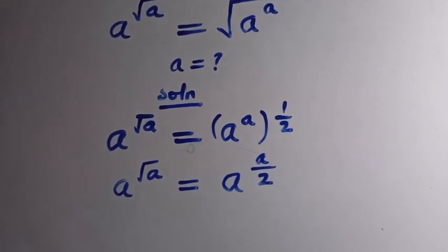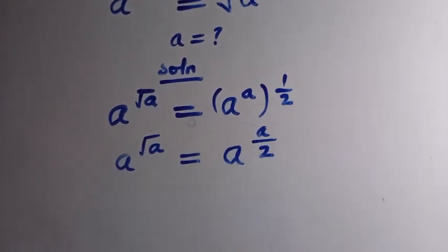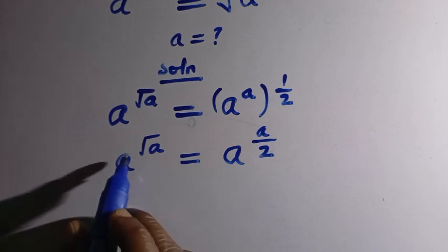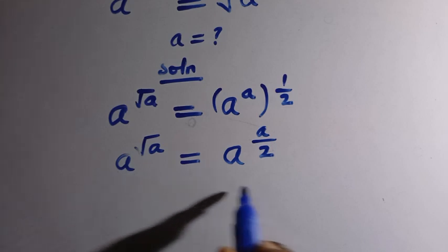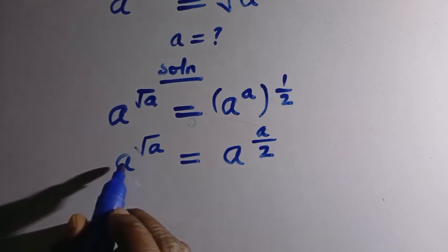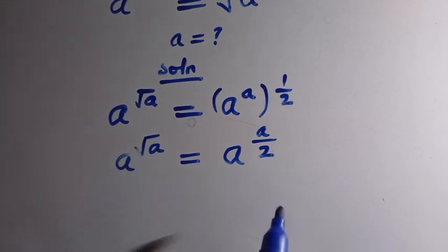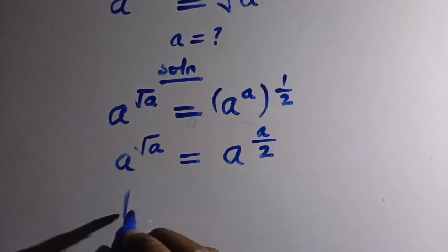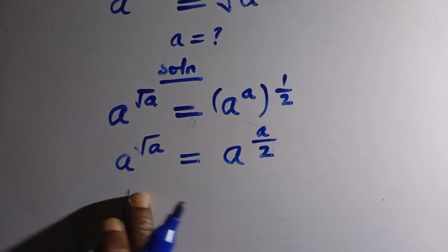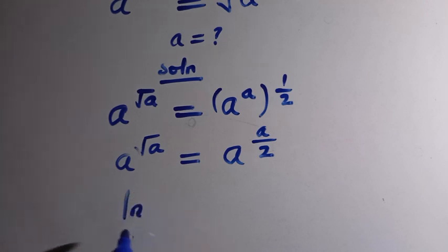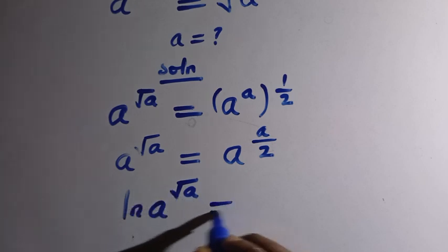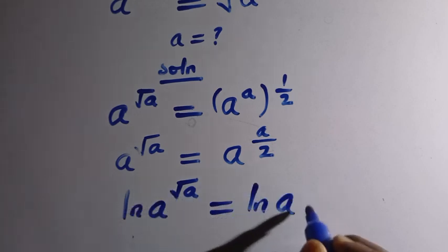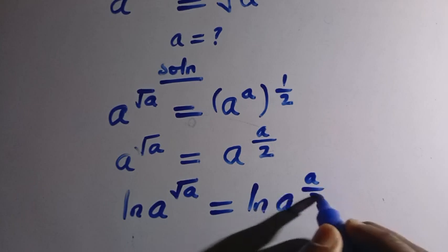Next, suppose we introduce the natural log on both sides. If we simply cancel a and a here, we are not getting all the solutions as intended. So we leave the equation as it is and introduce ln on both sides, giving us ln of a raised to power of square root of a equals ln of a raised to power a divided by 2.